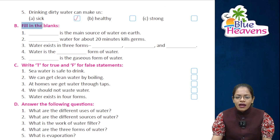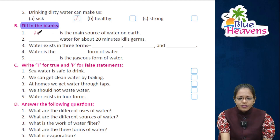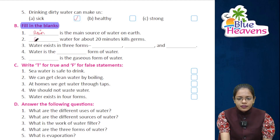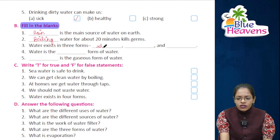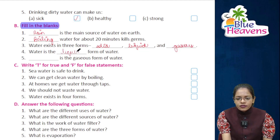Now let's do exercise B — fill in the blanks. Rain is the main source of water on earth. Boiling water for about 20 minutes kills germs. Water exists in three forms — solid, liquid, and gaseous. Water is the liquid form of water. Steam is the gaseous form of water.